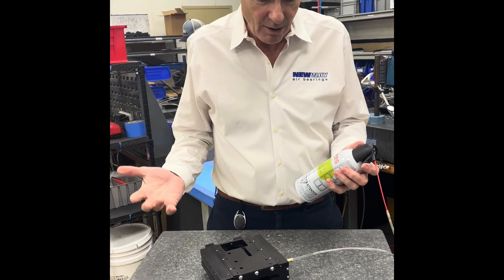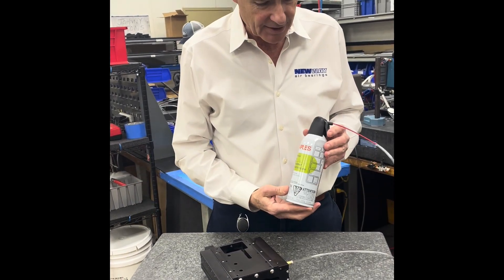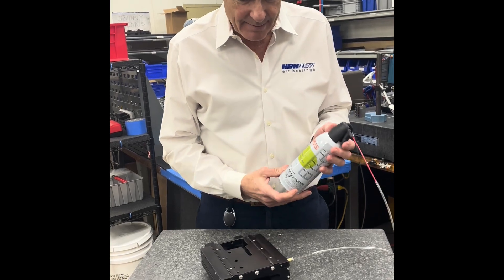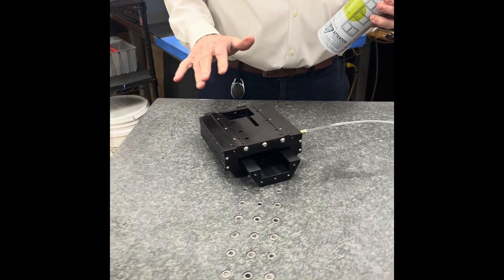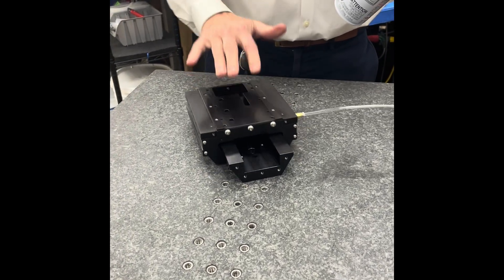The thing I'd like to point out is that the bearings use such a small amount of flow and pressure. We're going to use keyboard cleaner from Staples, put a little pressure to it. There you can see the slide starts to float frictionlessly on the guideway.